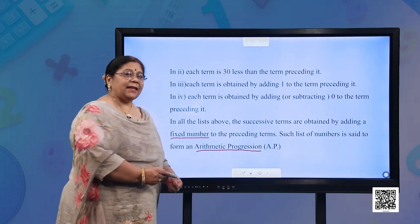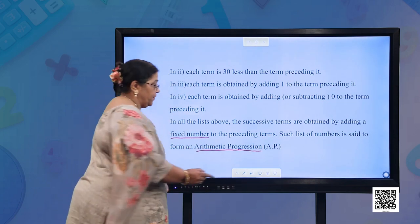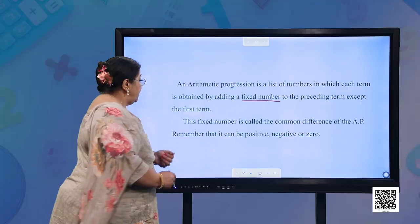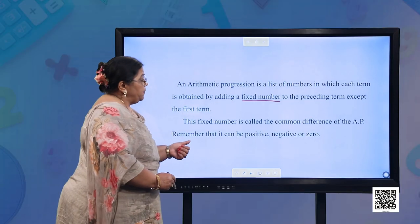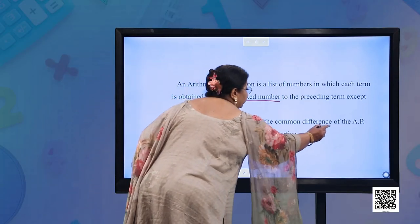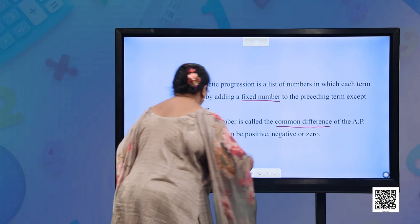We call it an AP. An arithmetic progression is a list of numbers in which each term is obtained by adding a fixed number to the preceding term, except the first term. The fixed number is known as the common difference of the AP.